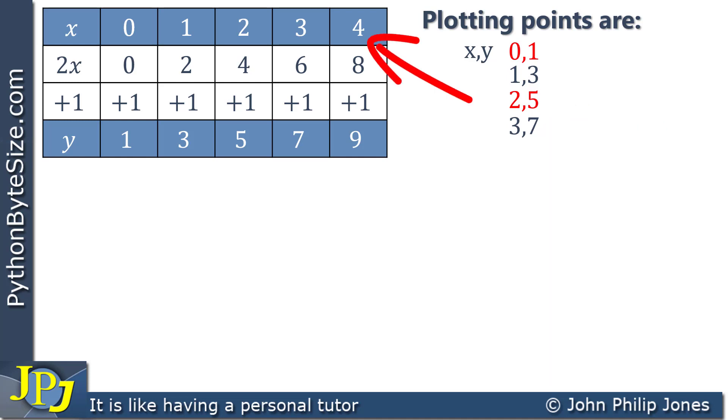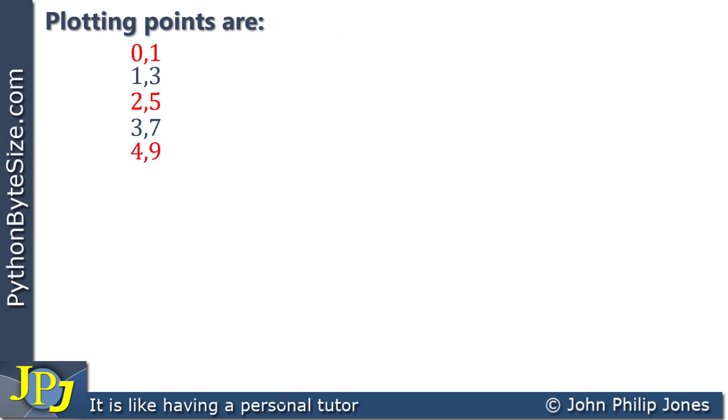And here we've got 4 and 9, and there you can see we have 4, 9, the x and the y respectively. Having extracted the plotting points, let's move them to one side and have a look at how we now draw the graph. So here you can see I'm moving the points to one side, and now I need to consider the x values, and these are the x values here from 0 all the way through to 4.